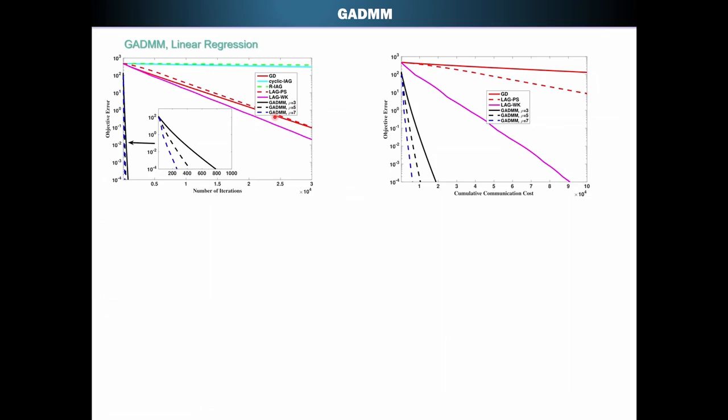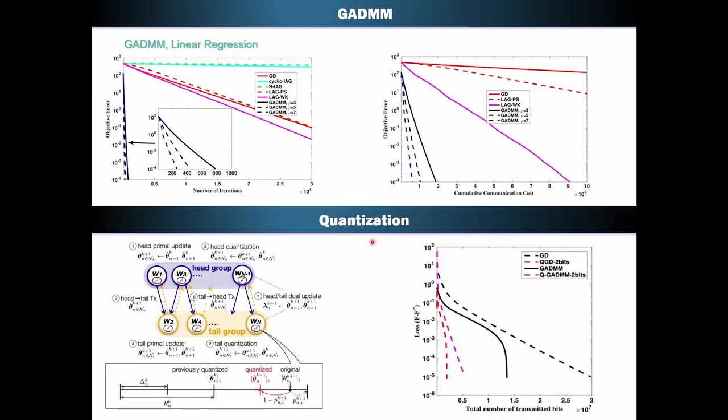Another extension in this type of work is to look at model quantization. Namely, the question is, can I actually reduce the precision of my model, say from 32 bits to say one bit or two bit and not take a hit on the accuracy? So that's what we did in a follow up work. And we show here the result. This is the loss, the total number of transmitted bits for gradient descent baseline. And this is the precision baseline, GADMM, and its two bit quantized version. So you can see that we get significant gains in terms of transmitting less number of bits.